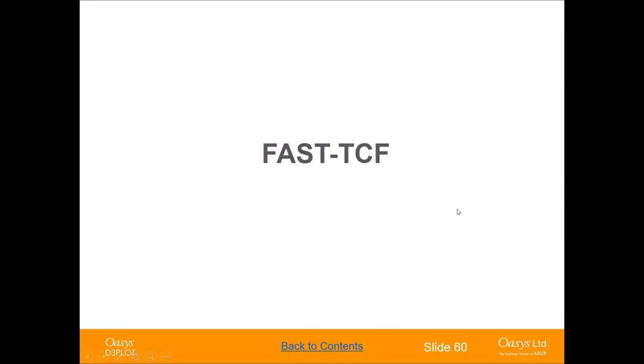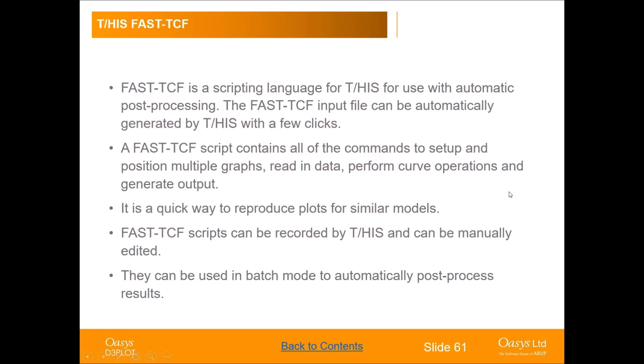Now we're going to move on to some tips for THIS, and the first thing is FastTCF — a simple way of creating scripts to automate post-processing for similar models. FastTCF is a scripting language for THIS that helps automate post-processing. Its big advantage over JavaScript is that you can automatically generate FastTCF scripts within THIS. It's a fairly general scripting language containing commands to set up and position multiple graphs, read in data, perform curve operations, and generate output.